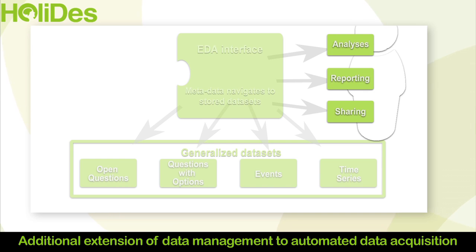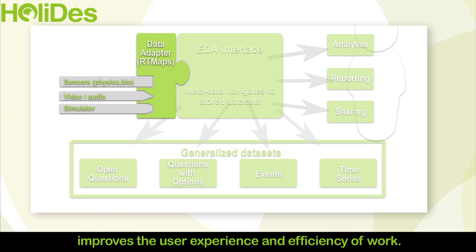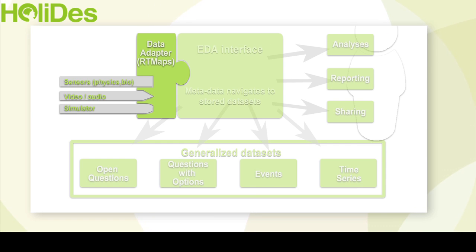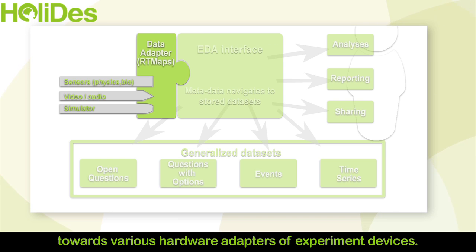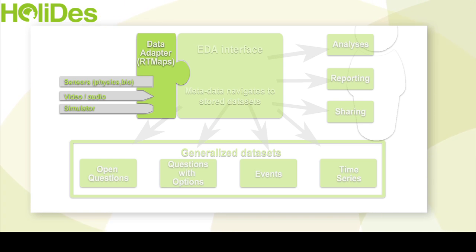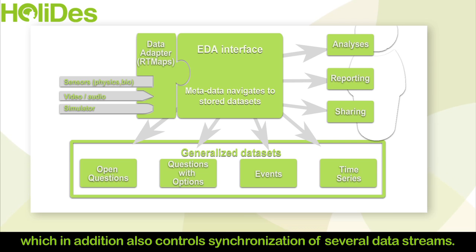Additional extension of data management to automated data acquisition improves the user experience and efficiency of work. The extension is based on abstraction of the EDA interface towards various hardware adapters of experiment devices. Holidays HF RTP provides such abstraction as part of the RT Maps tool, which in addition also controls synchronisation of several data streams.